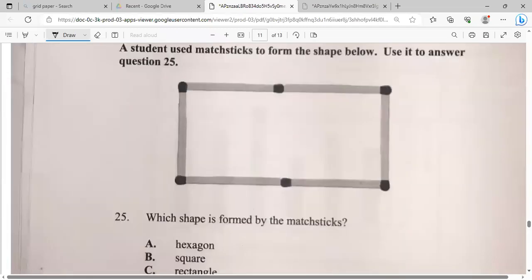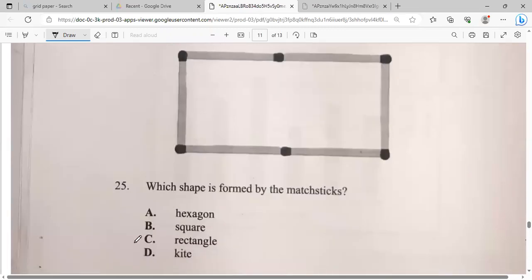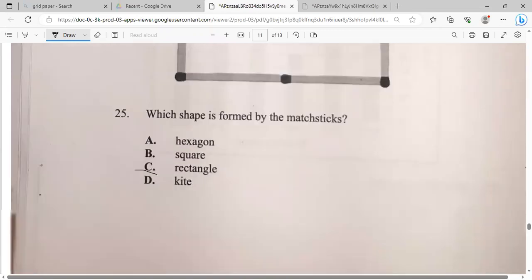A student used matchstick to form the shape below. Use it to answer a question. Which shape does it form by the matchstick? Is it a hexagon, a square, or a rectangle, or a kite? And that would be a rectangle. Two long sides and two short sides. That's what they used to say at primary school or basic school. By the way, my grandmother was an early childhood teacher. There are so many teachers in my family.